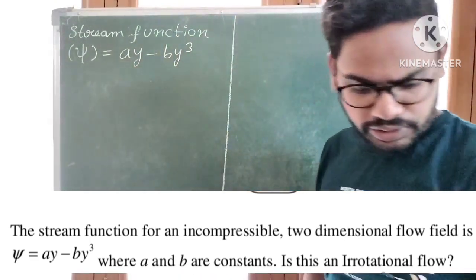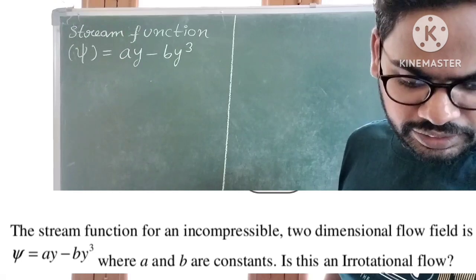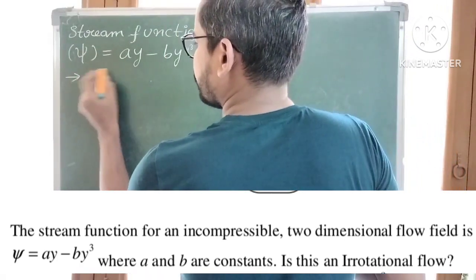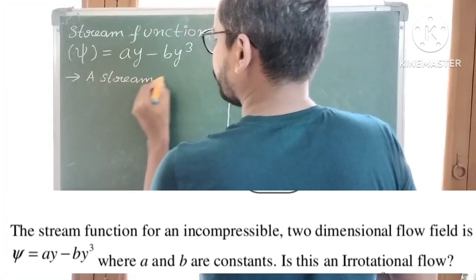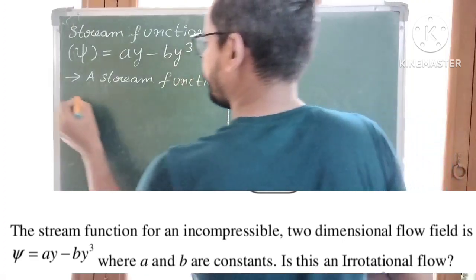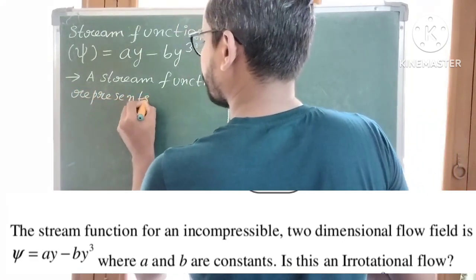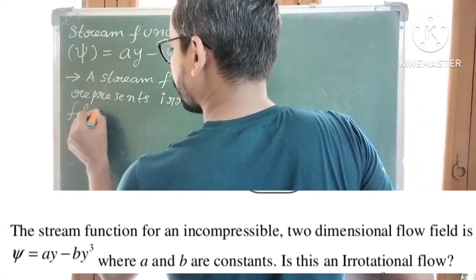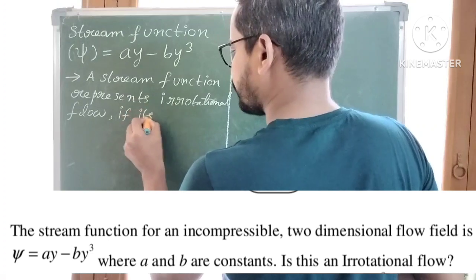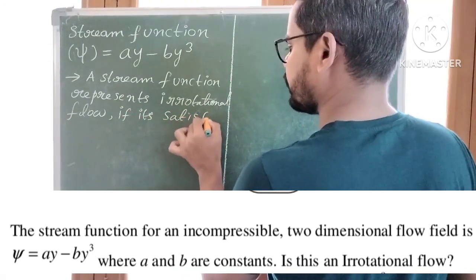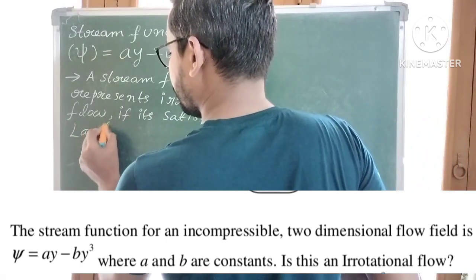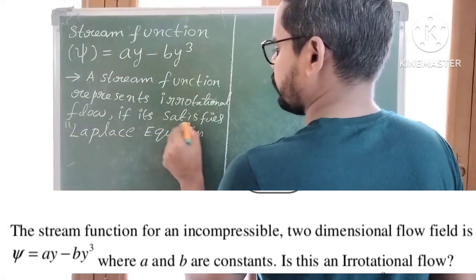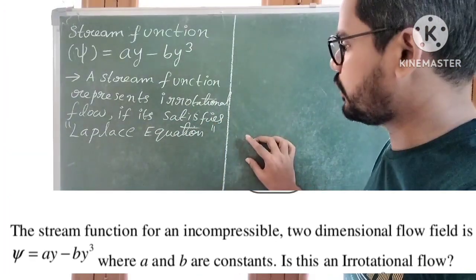This is the stream function. We need to check whether this flow is irrotational or rotational. In general, in the concept of stream functions, a stream function represents irrotational flow if it satisfies the Laplace equation. So a stream function represents irrotational flow if it satisfies the Laplace equation.